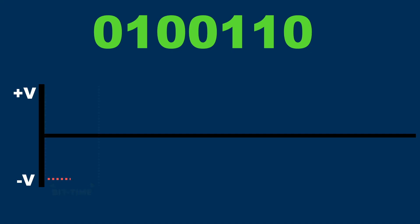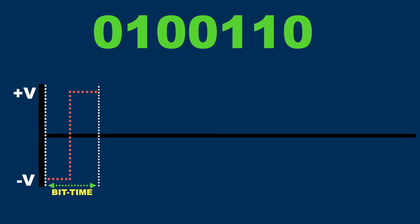So for example, this sequence of bits would look like this. The first bit is a zero, so the signal is at the negative voltage level for half of the bit time, and then, in the middle of the bit, the signal changes to a positive voltage level.